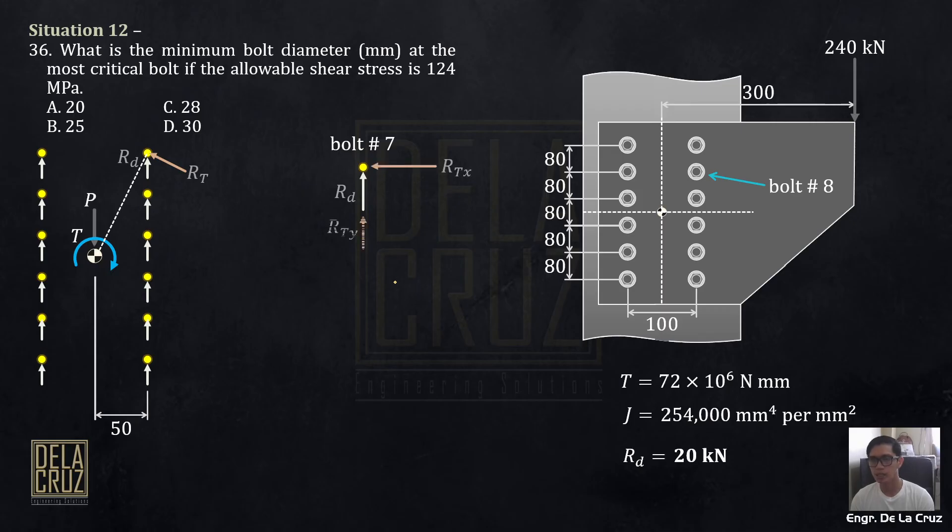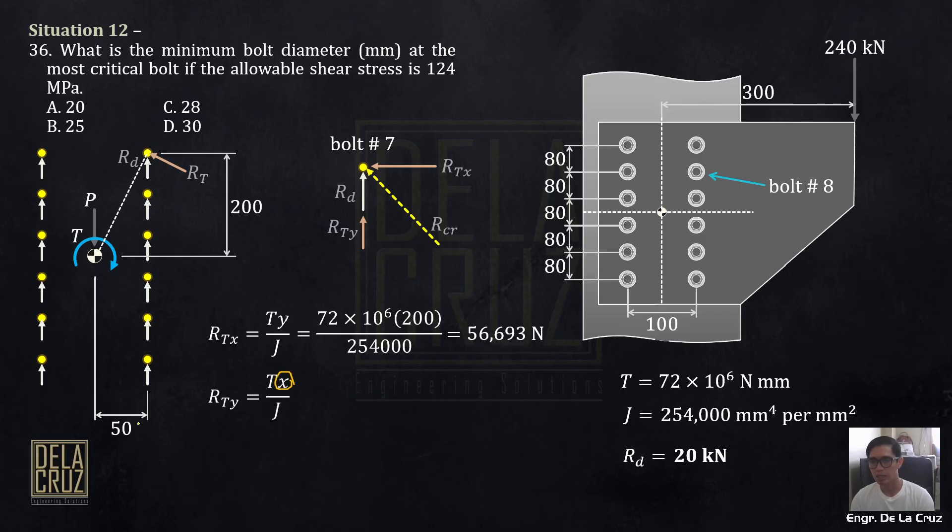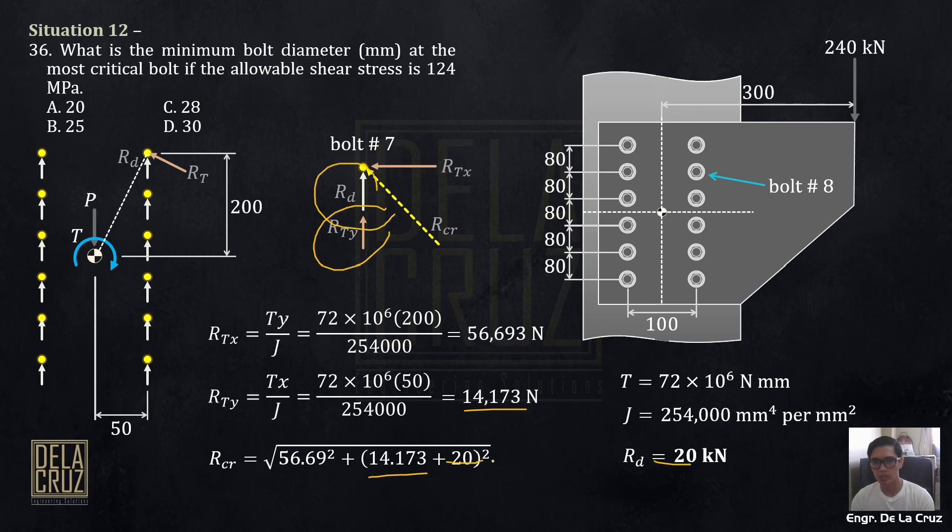Okay? So, this is the direction of the reaction due to torsion. To counter the moment. It should counter the moment. Let's call it bolt number 7 because that's number 8. Let's call it bolt number 7 for critical. Same thing. Again, you have RD, RTX, and RTY. And, this is the critical reaction of the bolt or maximum on the other hand. So, that distance is 200. Okay? So, we'll still get RTX and RTY. Of course, it will change because its Y is different. Its Y here is 200. Okay? It became 200. This is our RTX. And, RTY, our X is still the same. So, the value is still the same as earlier. The same value as earlier. What changed is RTX. So, total load on bolt number 7 or the critical load on the bolt is square root of RTX squared. I made it kilonewtons 56.69 plus 14.173 RTY and RT 20 squared. Let's get the critical load. 66.192 kilonewton.